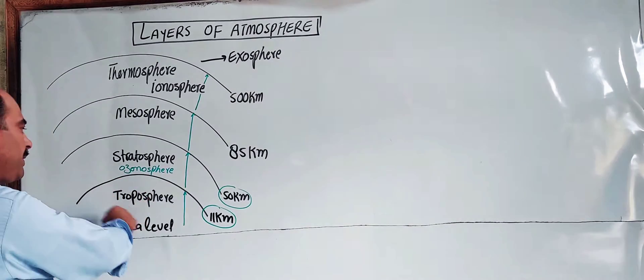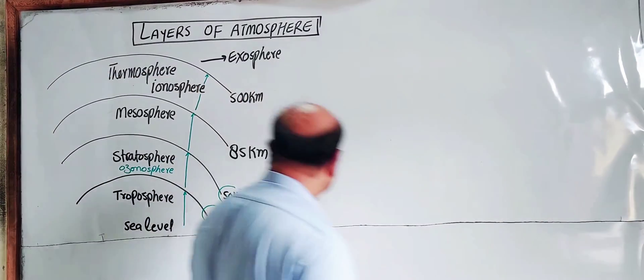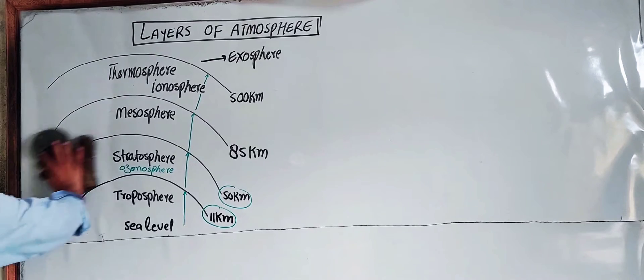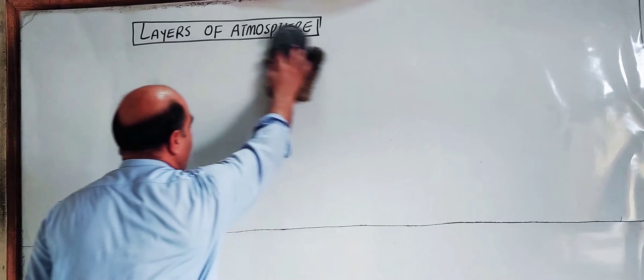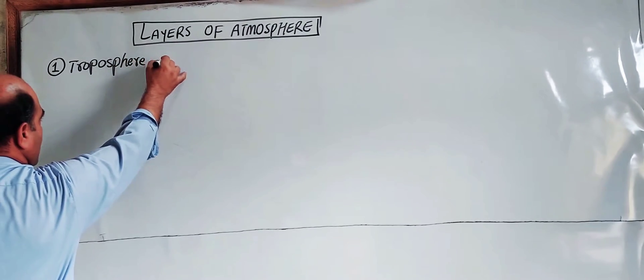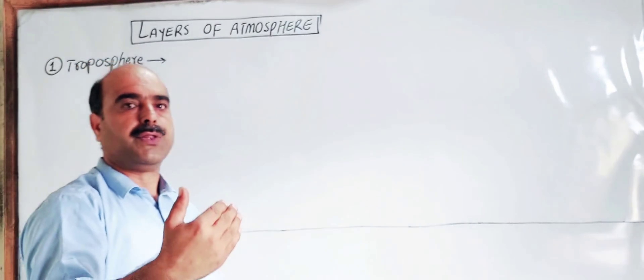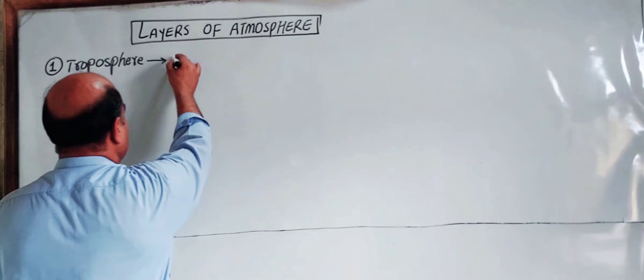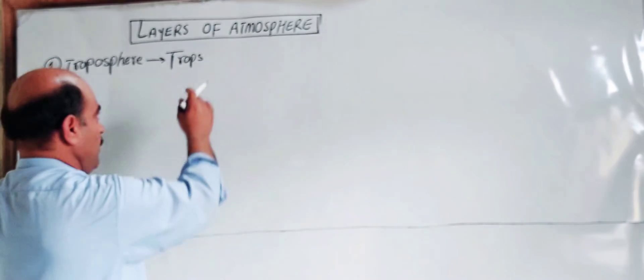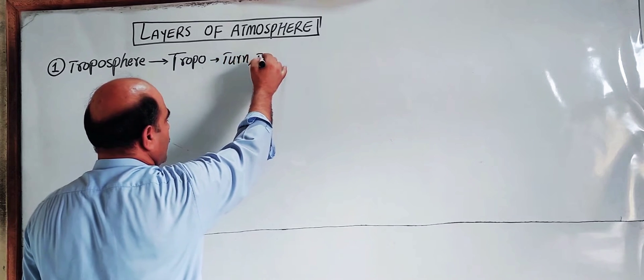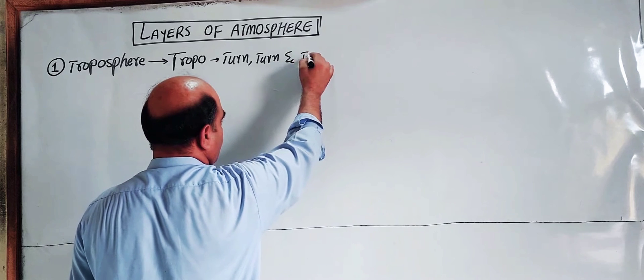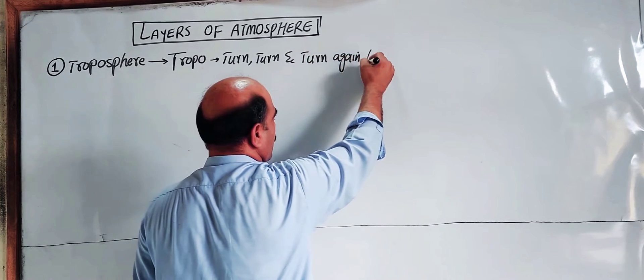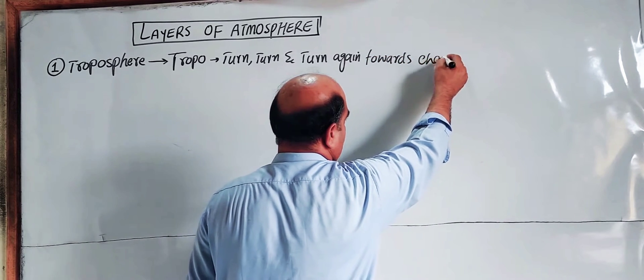Now let us discuss the characteristics and properties of each layer one by one. The first one is the Troposphere. The word 'tropos' is derived from the Greek word 'tropos', meaning 'turn' — turn and turn again, meaning change. So troposphere means the region of change.